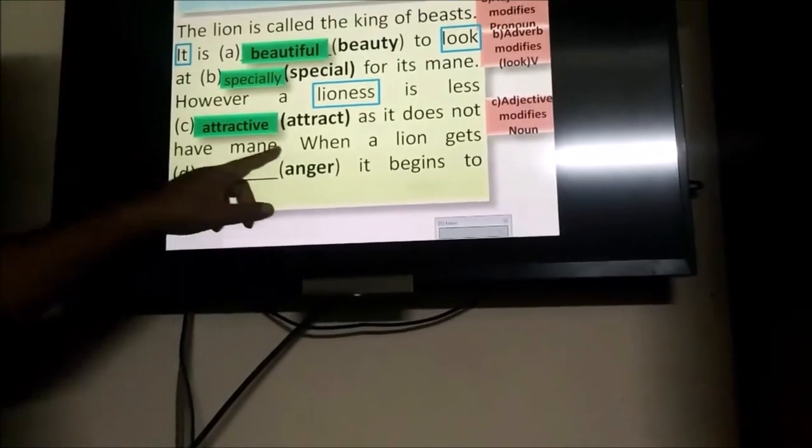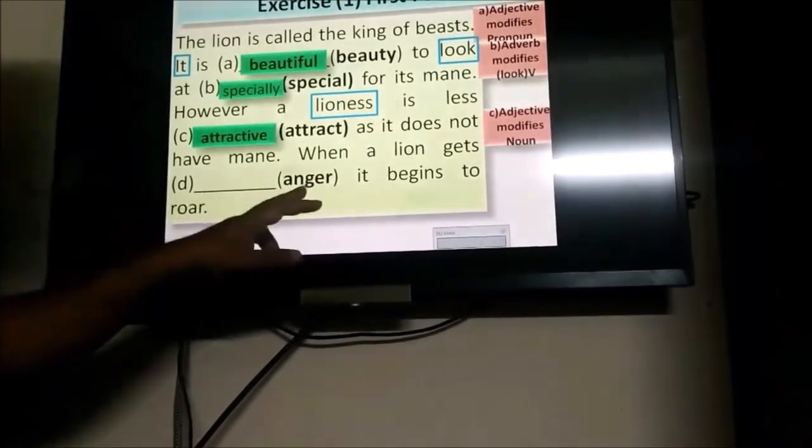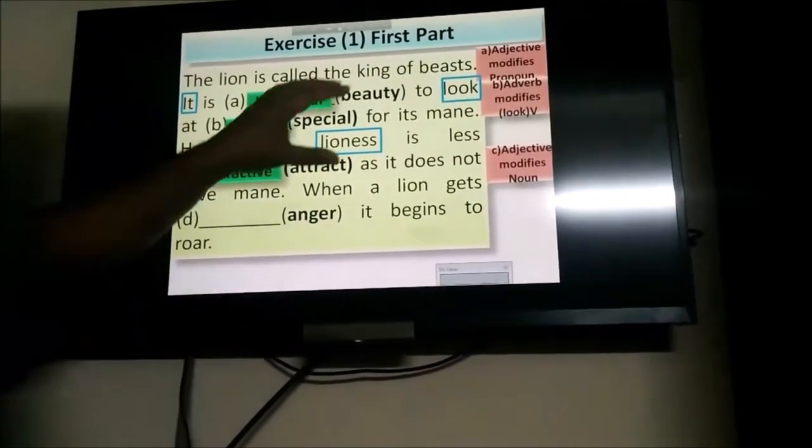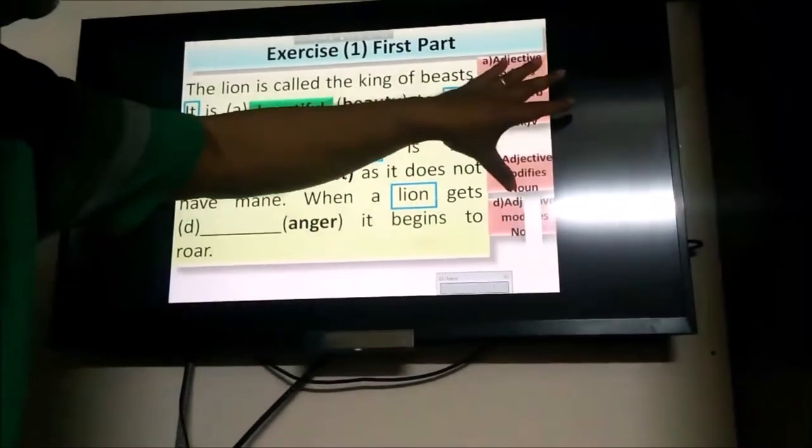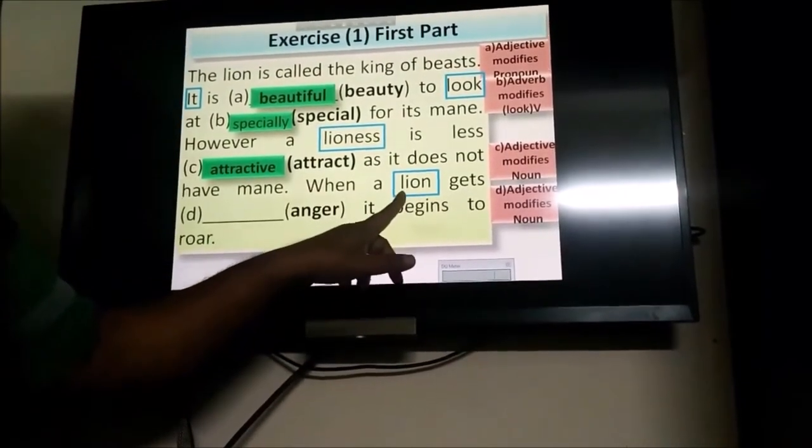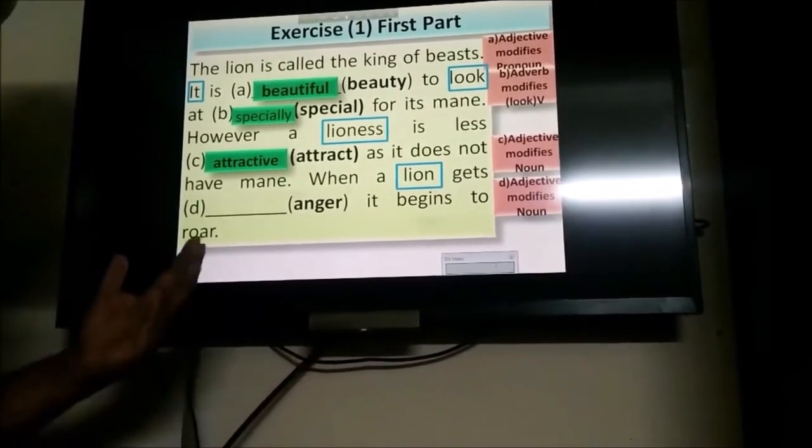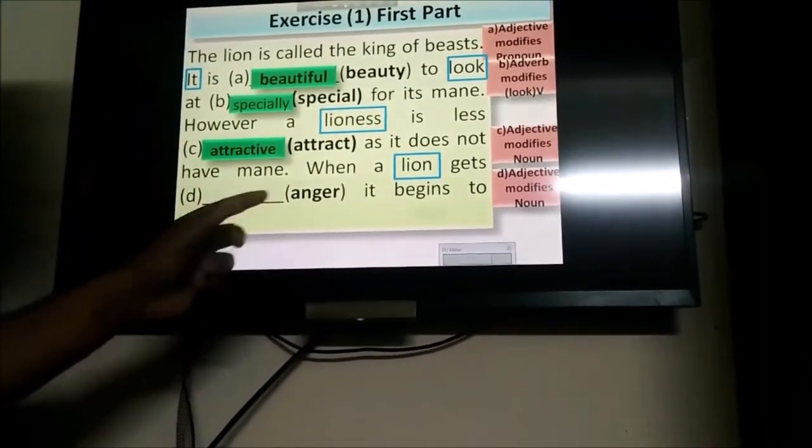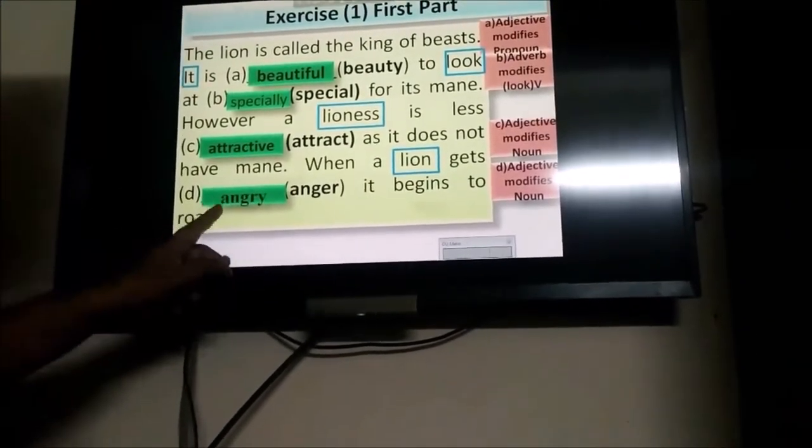As does not have a mane. When a lion gets anger. So, anger is a noun. You need to turn this word into an adjective. An adjective modifies noun. The noun is here, lion. So, only Y will be added for turning it into an adjective. Y is a suffix here. So, what will your answer be? Angry.